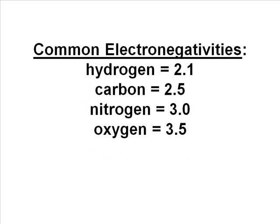Here are the electronegativities of these four elements: 2.1 for hydrogen, 2.5 for carbon, 3 for nitrogen, and 3.5 for oxygen.